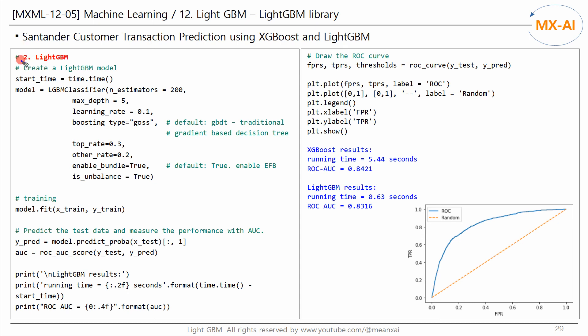Next, let's use the light GBM library. Set the number of boosting to 200 as before and set the tree depth and learning rate to 5 and 0.1 respectively. Set boosting type to GOSS, gradient-based one-side sampling. Set the A and B for GOSS algorithm to 0.3 and 0.2 respectively. And set the enable bundle to true.